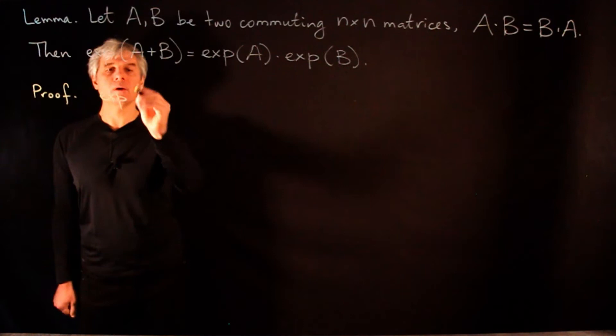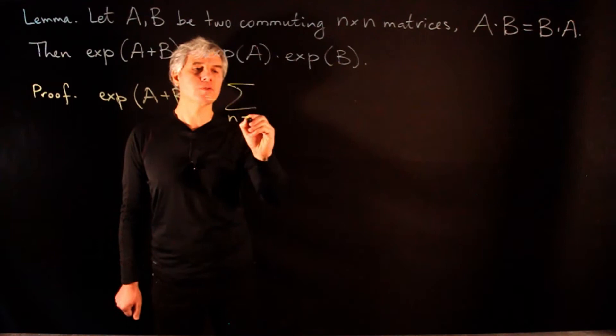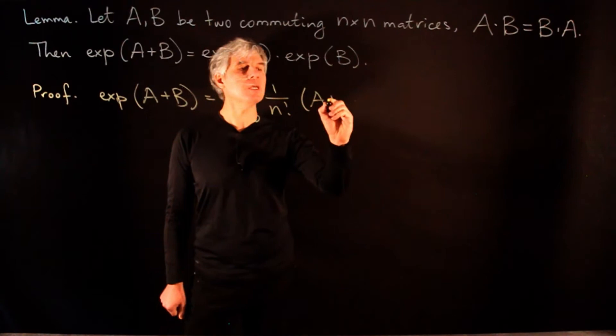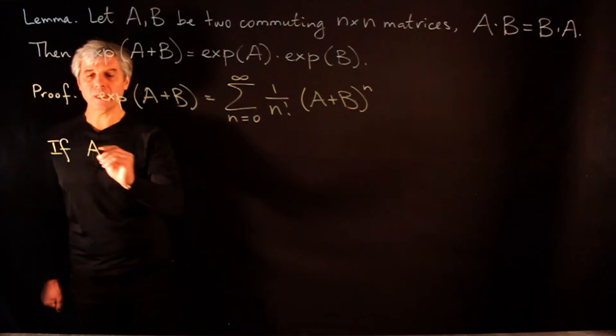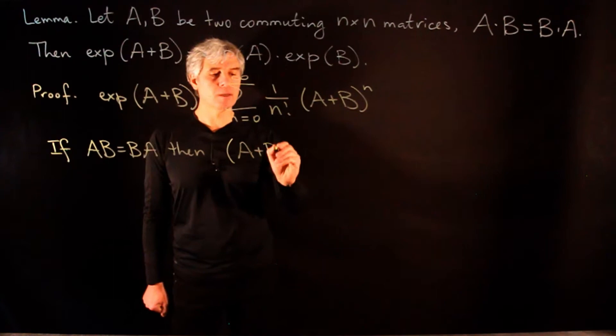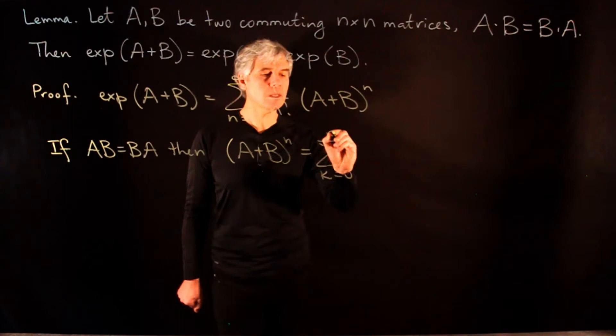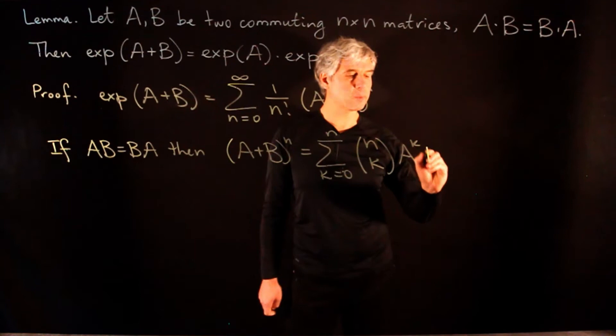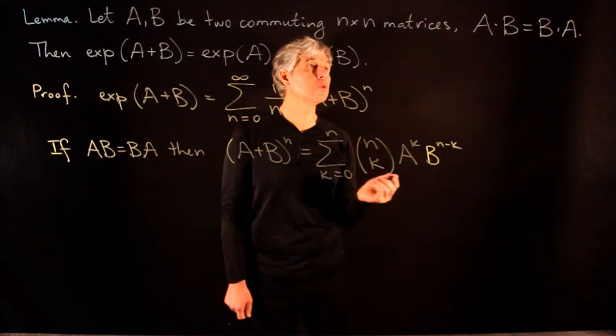The exponential of A + B is the sum from n=0 to infinity of (1/n!) times (A+B)^n. Now, if AB = BA, then Newton's binomial formula holds: (A+B)^n equals the sum from k=0 to n of the binomial coefficient (n choose k) times A^k times B^(n-k).